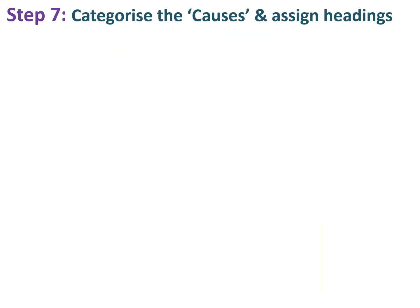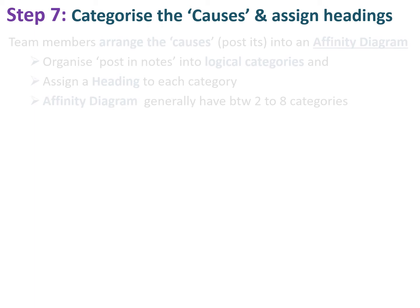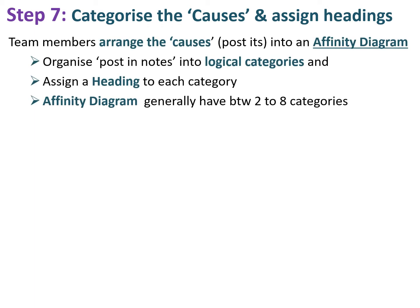Step seven is where we categorize the causes and assign headings. Team members arrange all the causes — the post-it notes — into what we call an affinity diagram. They read all the post-it notes, organize them into logical categories, assign a heading to each category, and generally end up with between two to eight categories.